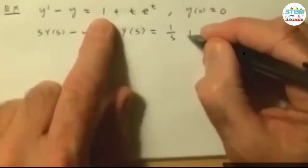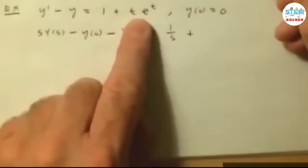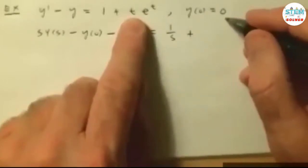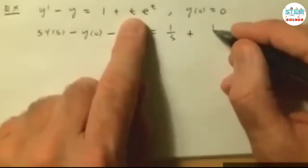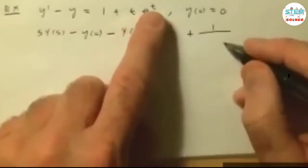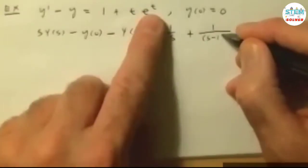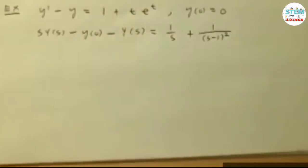On the right-hand side, Laplace transform of 1 is 1 over s. Now this one is where we're going to need the first translation theorem, right? So Laplace of t is 1 over s squared, but because of the e to the t, the s becomes s minus 1 squared. So the first translation comes into play.